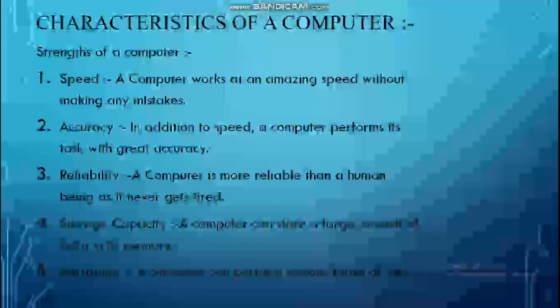Next strength: versatility. A computer can perform various types of jobs simultaneously. For example, someone can listen to music while typing in MS Word — both tasks can be performed on a computer at the same time. That is why we say our computer is multitasking — it can deal with multiple tasks simultaneously. This is possible because of the high processor speed, which humans cannot even perceive.